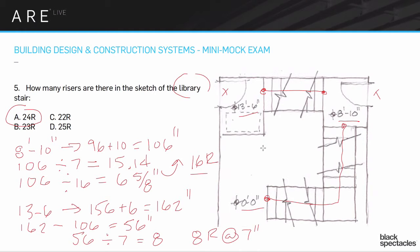Timothy asks: why not just divide 162 inches by 7 inches to get 24 risers directly, instead of doing it in two parts? Great question. The reason is that the 8'10" floor level is a given — there's an actual floor there — and if we divided 162 by 7 as a single run, the risers near that floor level wouldn't line up exactly with that floor plane. It's also possible to get the wrong number that way, being off by one, because the two approaches can give slightly different results.